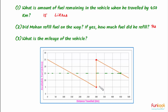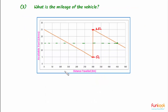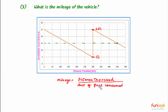The portion of the graph between the two red dots shows refilling. At that point the fuel left in the vehicle is 5 liters, and after refilling the fuel becomes 25 liters. So the fuel filled in the tank is 25 minus 5, that is 20 liters.